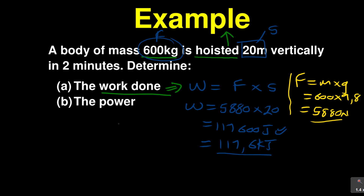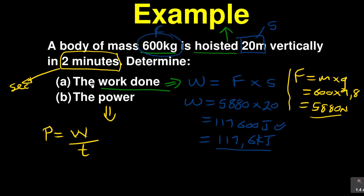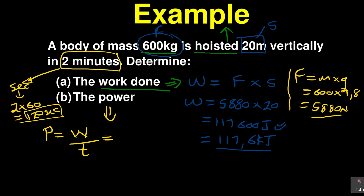For part B, we are calculating power. Remember, power is work done over time taken. The question gave us a time of 2 minutes, but the SI unit of time is seconds, so we need to convert. Two minutes times 60 equals 120 seconds. So power equals work done, which is 117,600, over time, which is 120 seconds.